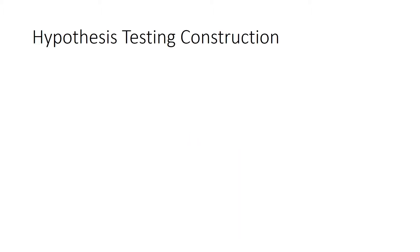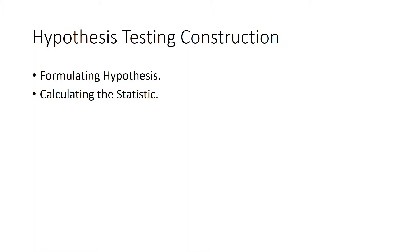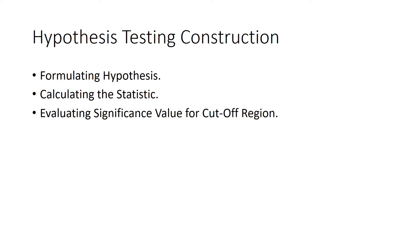I'm going to tell you about the four steps first and then cover each step in depth along with an example, so you get a better intuition of how hypothesis testing works. The first step is formulating the hypothesis, second is calculating the statistic, third is evaluating the significance value for the cutoff region, and the fourth is the decision.